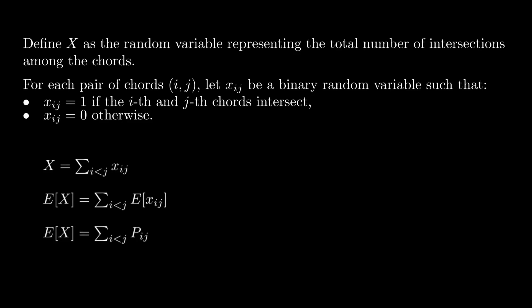There are 10 chords in total, so there are 10 choose 2, or 45 total pairs of chords. Hence, E[X] is equal to 45 times pij since each pij are equal. Hence, the problem boils down to finding the probability that the i-th and j-th chords intersect.